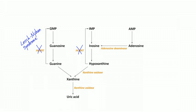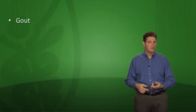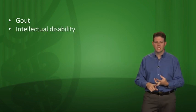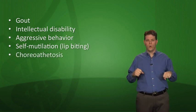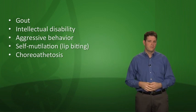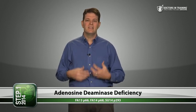With Lesch-Nyhan syndrome, you can't salvage those purines, so you overproduce uric acid, which typically causes gout. You also see CNS problems: intellectual disability, aggressive behavior, and self-mutilation — classically lip biting — as well as choreoathetosis. Treatment is allopurinol for the hyperuricemia and gout, but unfortunately there's no drug to treat the neurologic features.